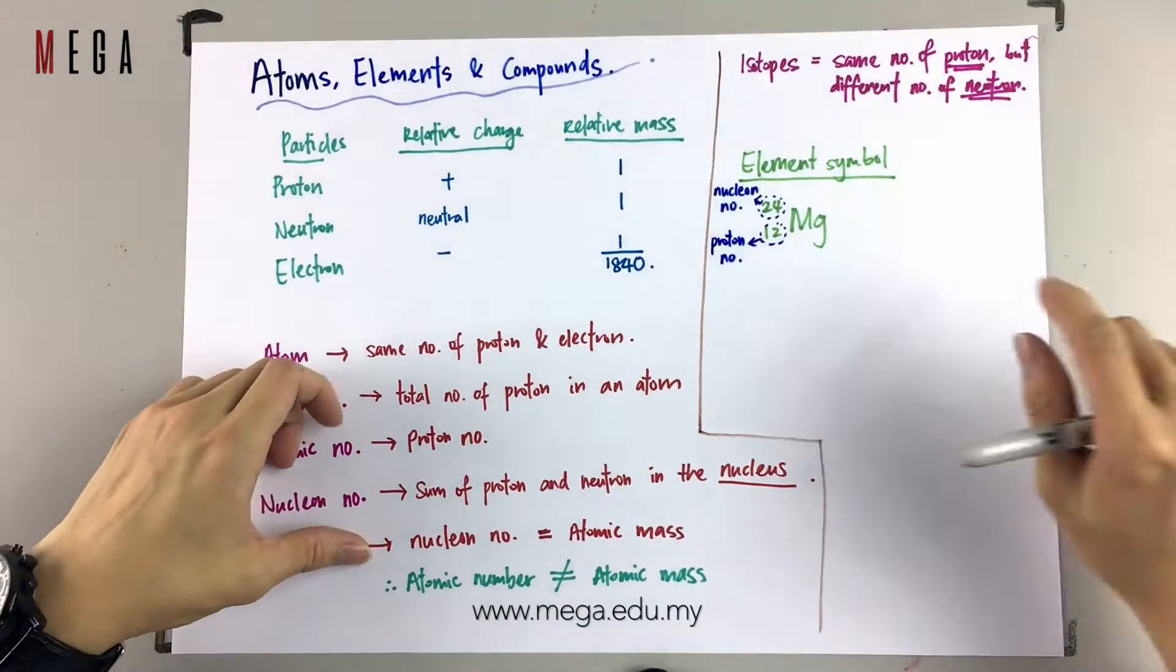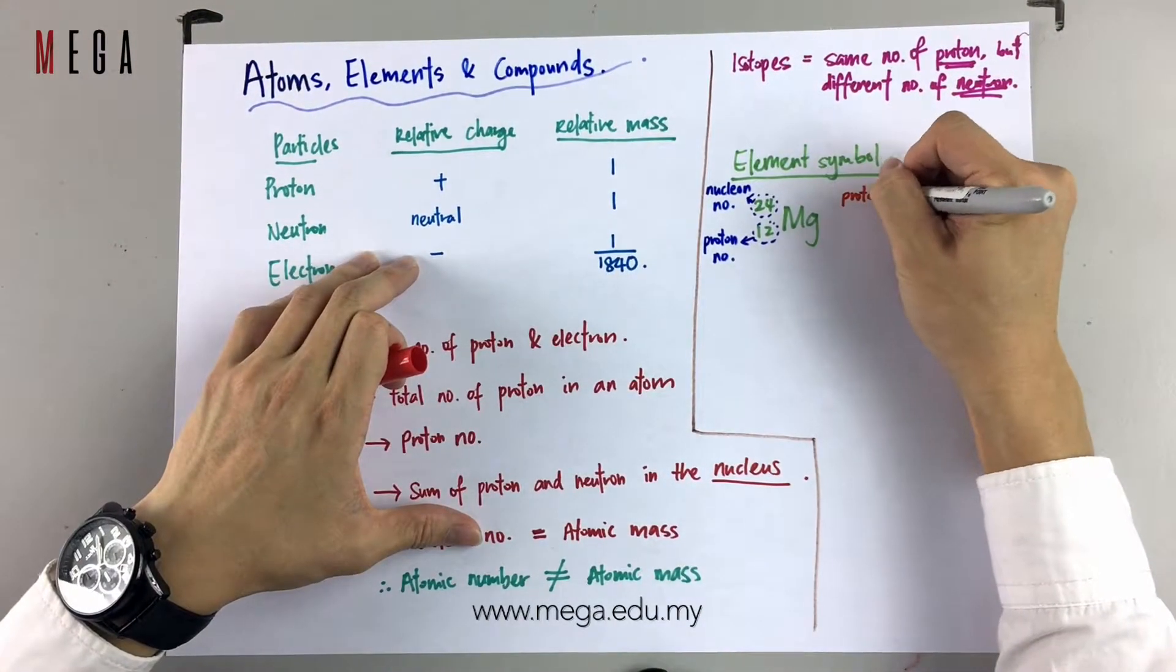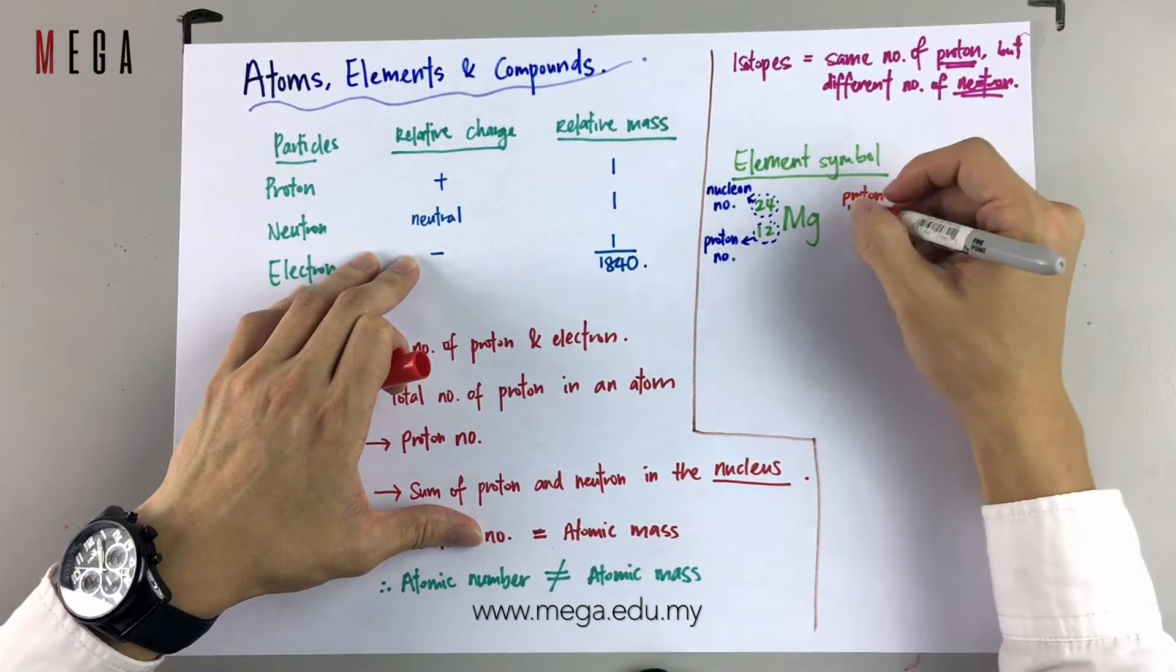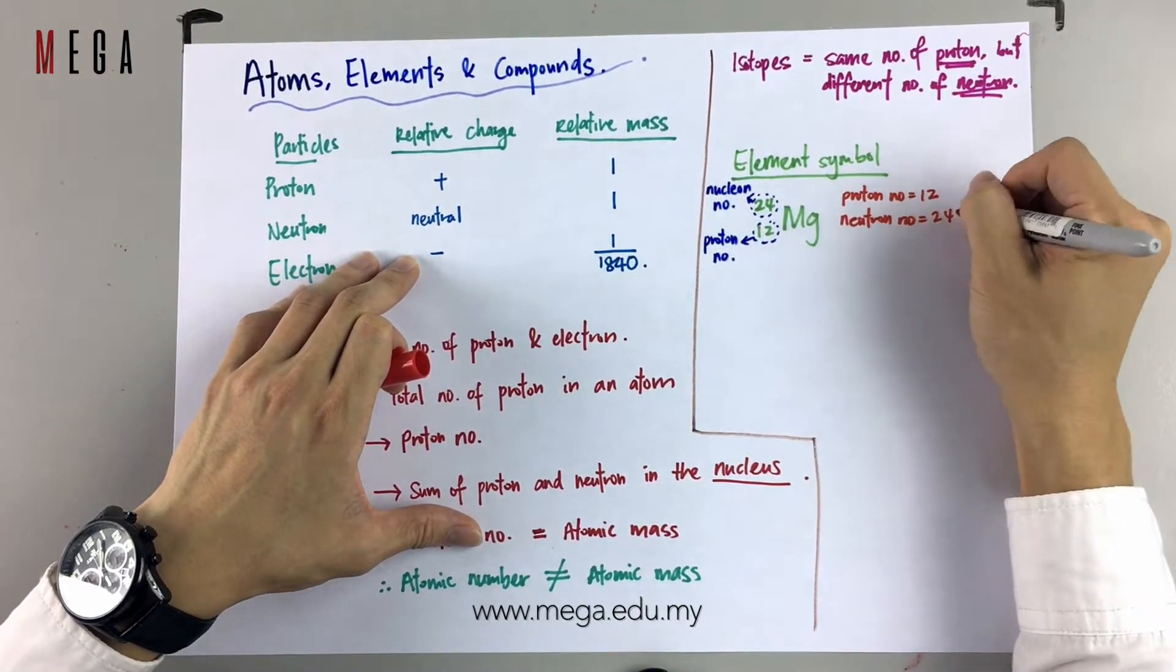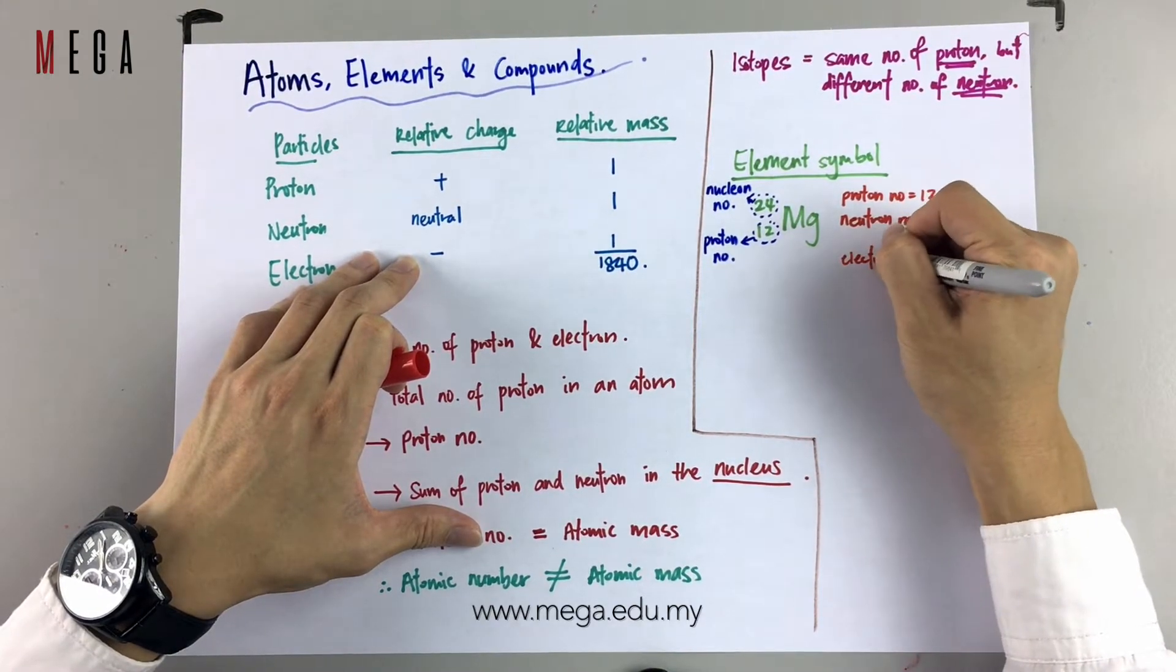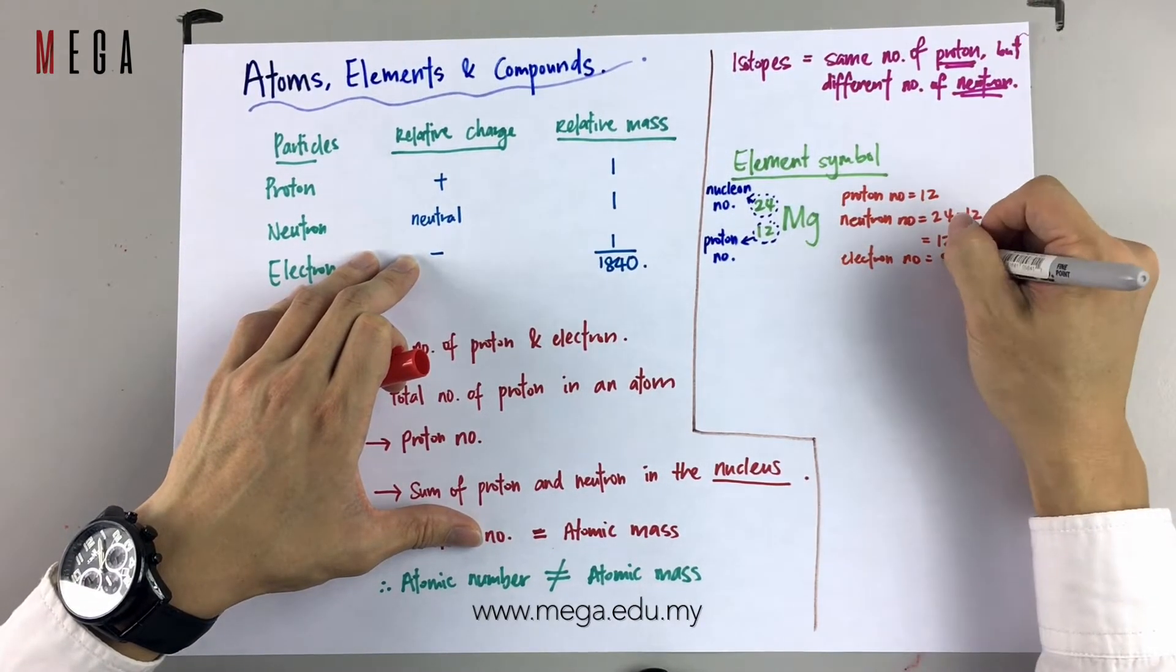Here you see the proton number for magnesium is 12. Neutron number basically means nucleon minus proton, which is 24 minus 12. You get 12. Electron number is 12. Thank you.